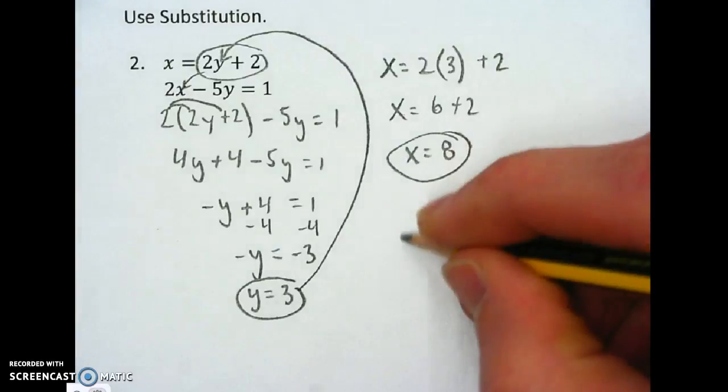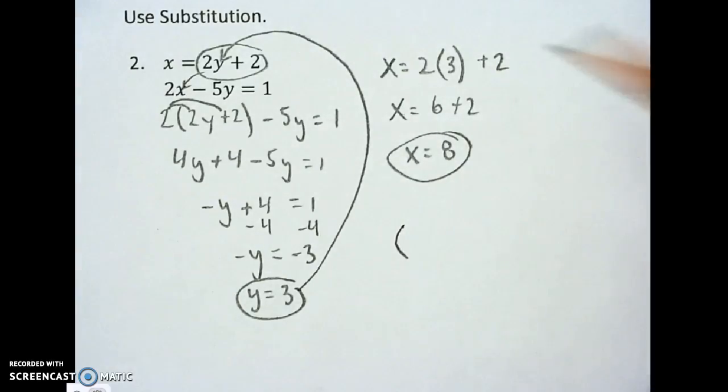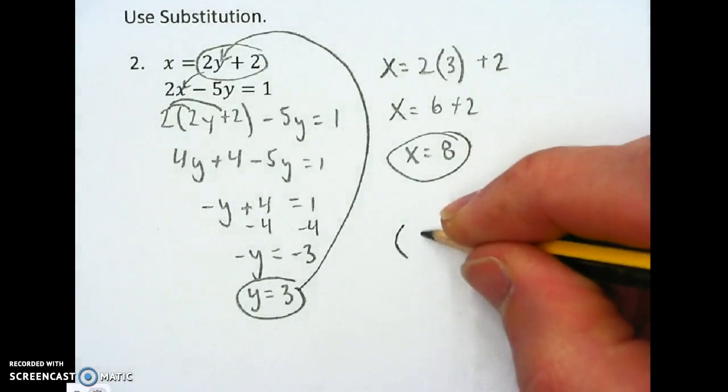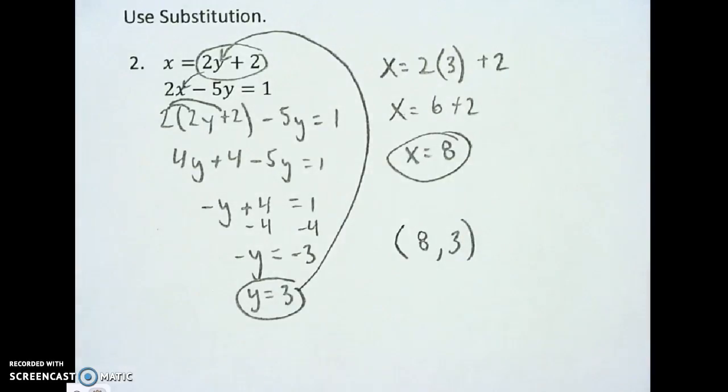I'm writing my coordinate pair, which is what you need on your warm-up tomorrow. 8, 3. So write that down. Make sure your name's on your warm-up. Don't do any solving. Just write these down and turn them into me. Over and out.